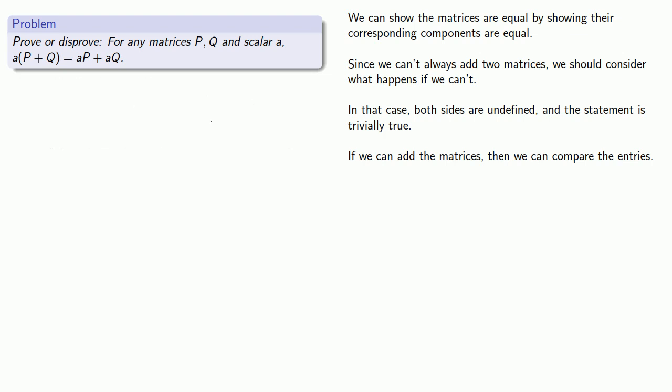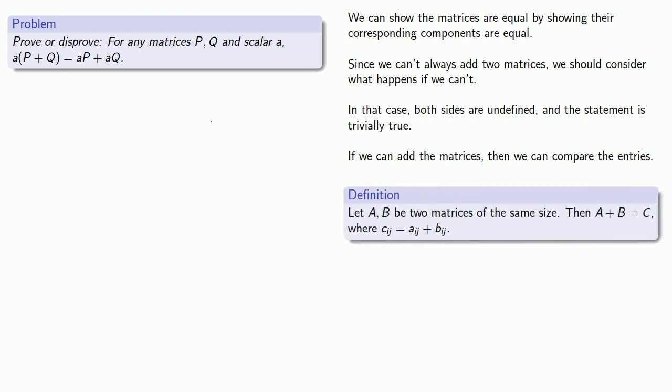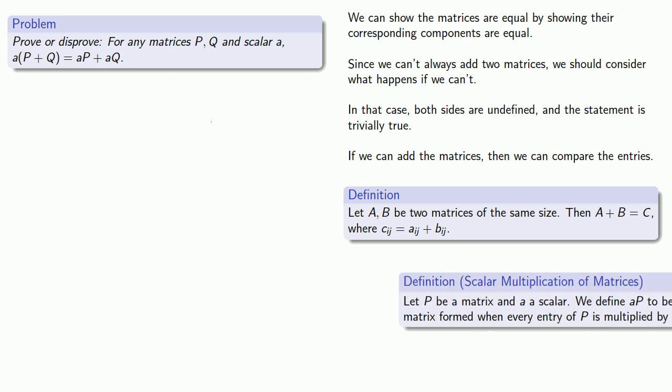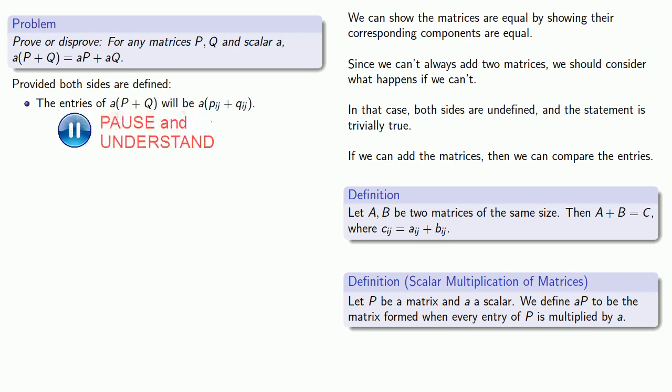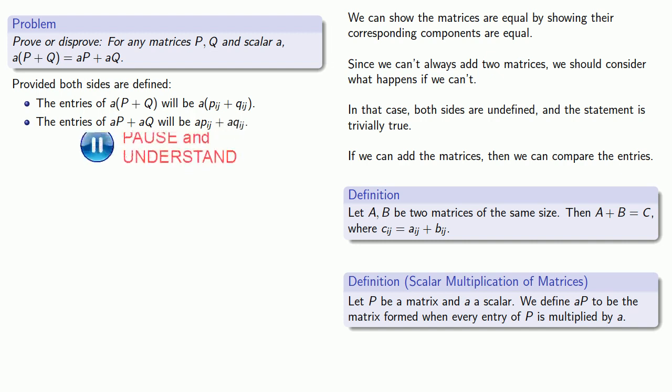So let's take a look at the entries of the matrix a times (P + Q). I can add the matrices P and Q together and the entries of that sum will be p_ij + q_ij. And this will be multiplied by the scalar a. Meanwhile, the entries of aP + aQ will be a times the entry of P, p_ij, plus a times the entry of Q, q_ij.